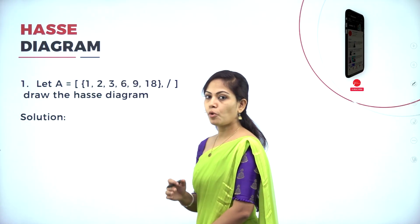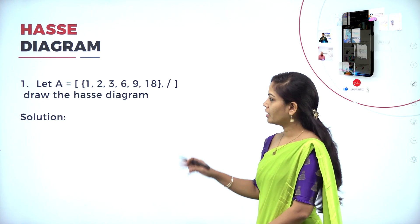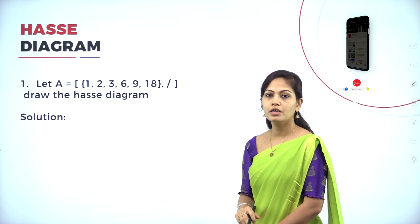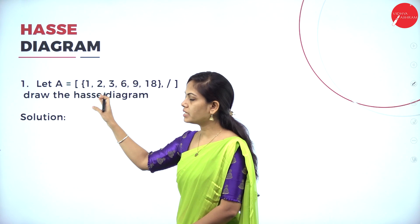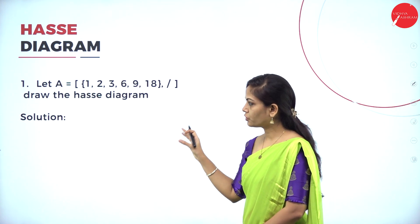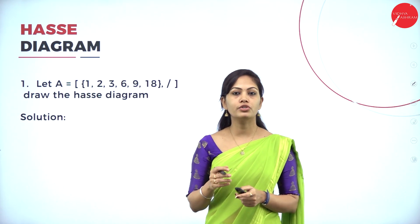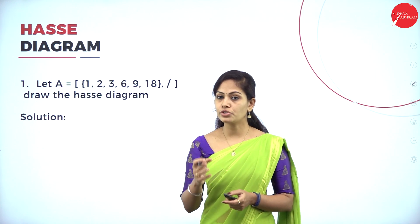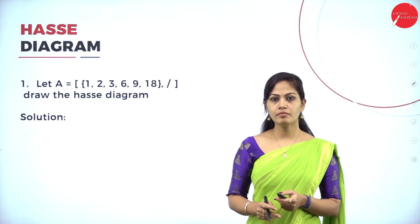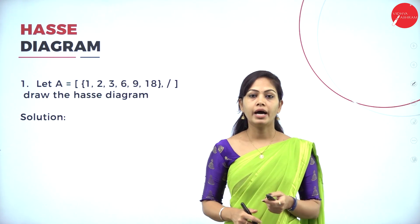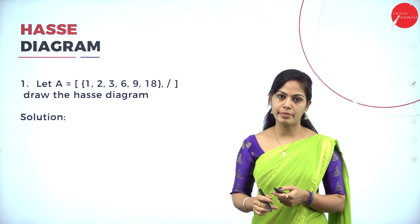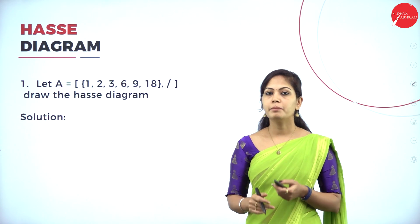Here we have one POSET — partial order set. First question: let A = {1, 2, 3, 6, 9, 18} with the divisibility relation. Draw the Hasse diagram. The procedure for drawing a Hasse diagram is: first draw a digraph, then remove the self loops, then remove the transitive edges, then show the elements in an upward direction, and finally remove the arrowheads.